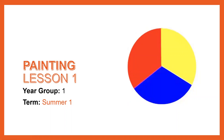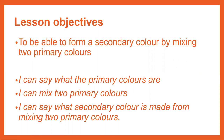Hello Year One and welcome to your first art lesson about painting. These are our lesson objectives for today. We need to be able to form a secondary colour by mixing two primary colours. By the end of the lesson you'll be able to say what the primary colours are, mix two primary colours together, and say what secondary colour is made from mixing two primary colours.